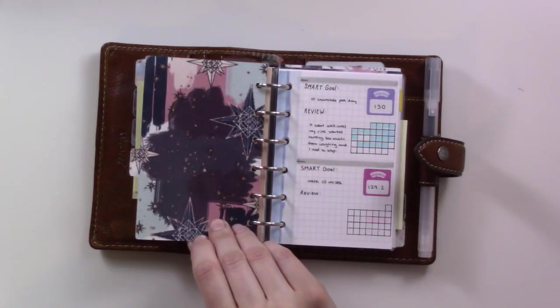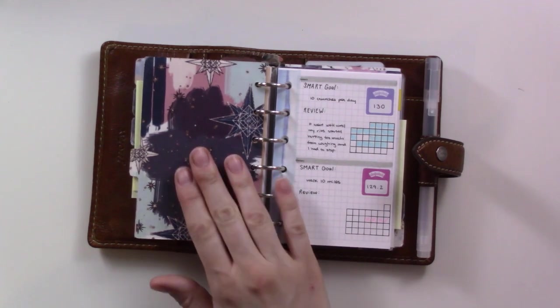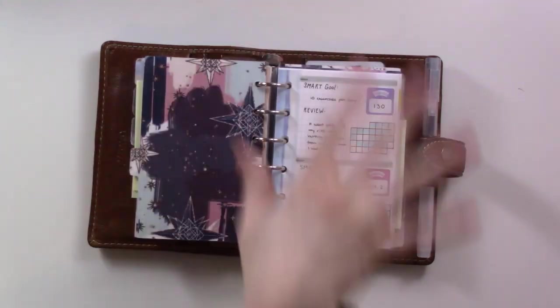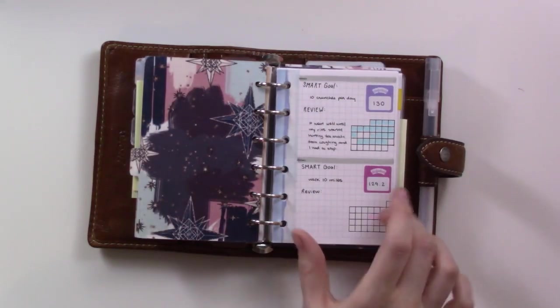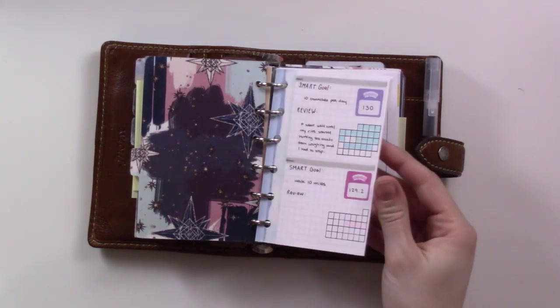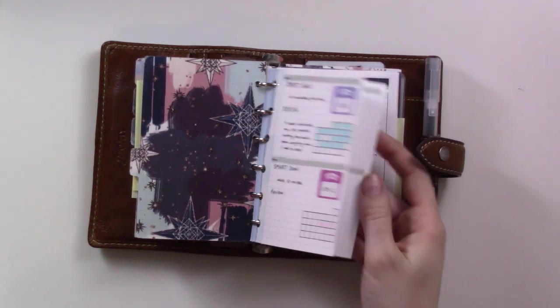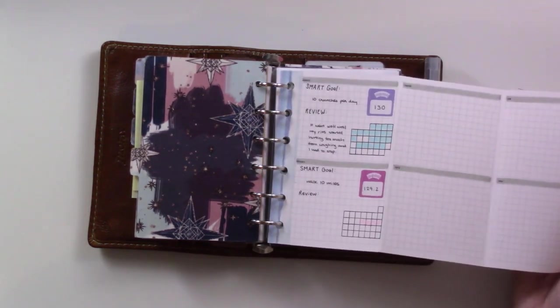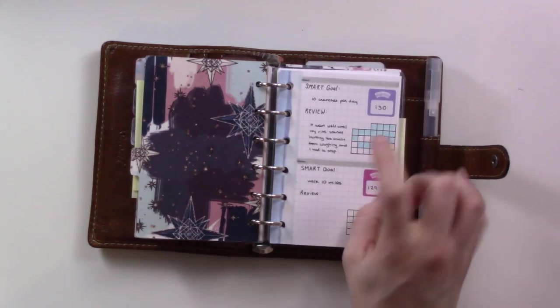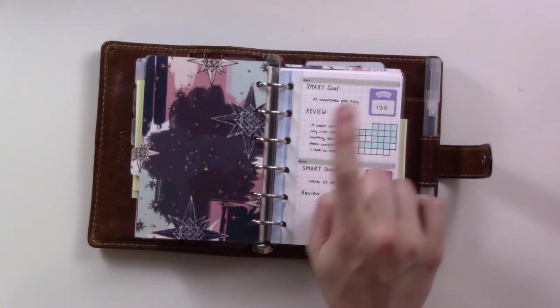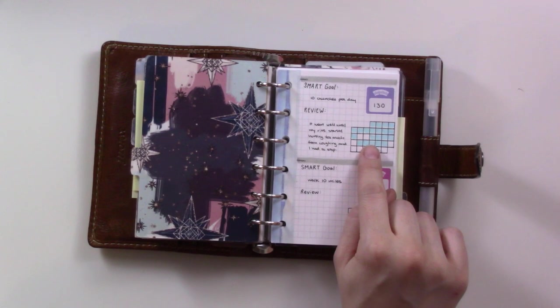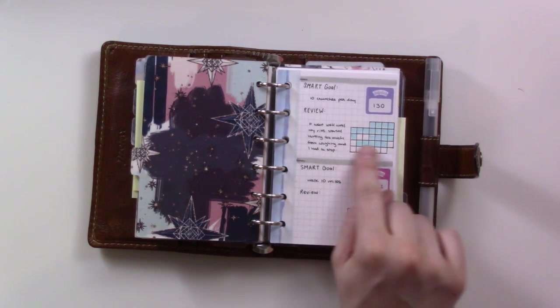This next section is health. First is this insert where I'm keeping track of my New Year's resolution. The idea is to set a goal, a SMART goal as it were, every month of the year and then track how that went. The first month I'm like I'm gonna do just ten crunches per day, start small. Went really good for a while, missed a couple days because I wasn't feeling well.